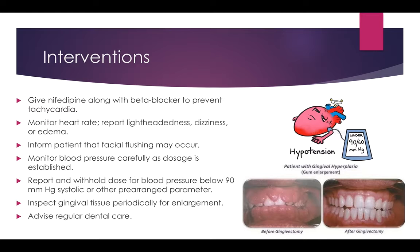Some interventions: give nifedipine along with a beta blocker to prevent reflex tachycardia, monitor the heart rate, report lightheadedness, dizziness, or edema, inform the patient that facial flushing may occur, monitor blood pressure carefully as dosage is established, report and withhold dose for blood pressure below 90 mmHg systolic or other prearranged parameters, inspect the gingival tissue periodically for enlargement, and advise regular dental care. Over here is an example of gingival hyperplasia before and after, and hypotension below 90 over 60.